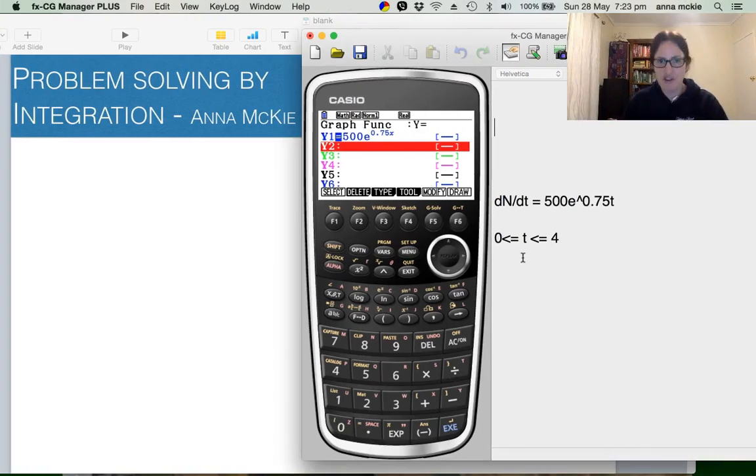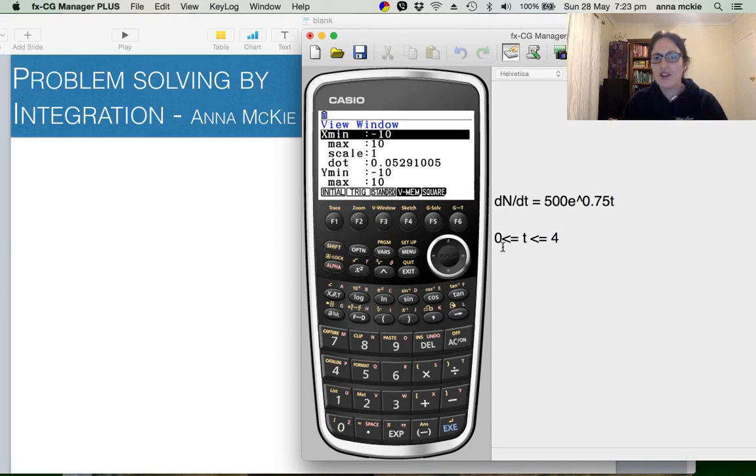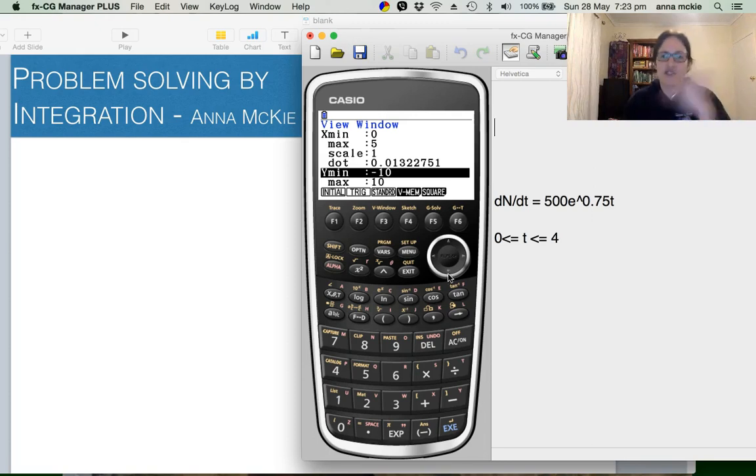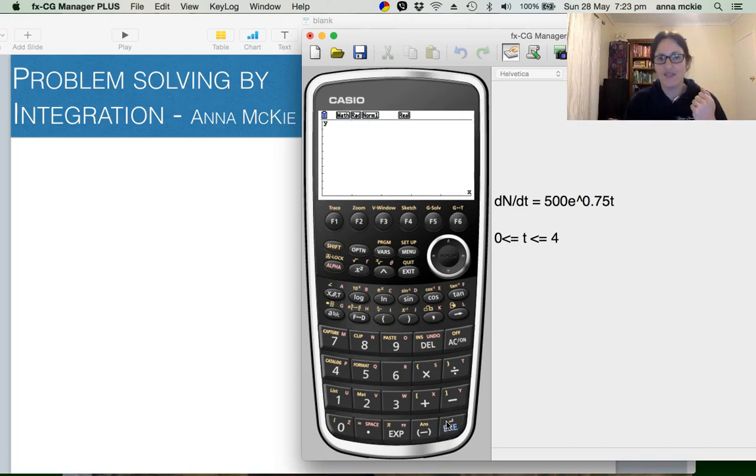Thinking about our view window, as always. So we are interested between zero and four because this is time. I always like to go one more so I can see a bit more on my screen. We're talking about the number of cars here or the rate flowing into an intersection. So we can't have any in our negative region. So let's have a look at that. Hmm, we can't see anything.